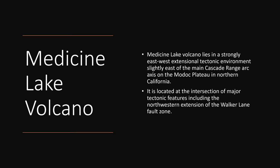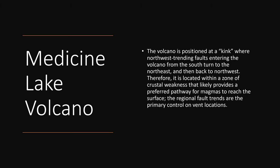Medicine Lake volcano is located at the intersection of major tectonic features, including the northwestern extension of the Walker Lake Fault Zone. The volcano is positioned at a kink where northwest-trending faults enter from the south, turn to the northeast, and then back to the northwest. Therefore it sits within a zone of crustal weakness that provides a preferred pathway for magmas to reach the surface. Regional fault trends are the primary control on vent locations — wherever the faults move, we'll see more crustal weakness and more volcanic eruptions, similar to a divergent plate boundary situation.